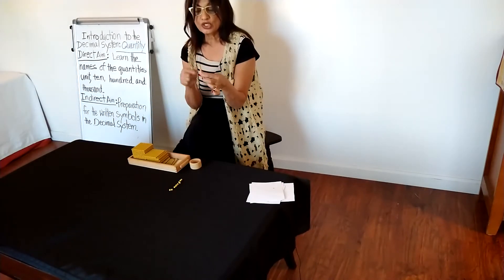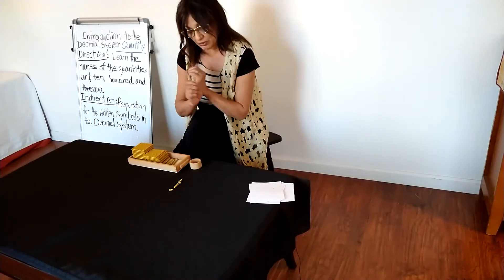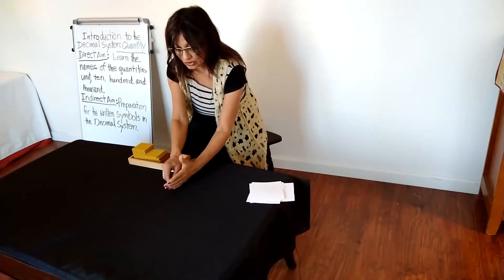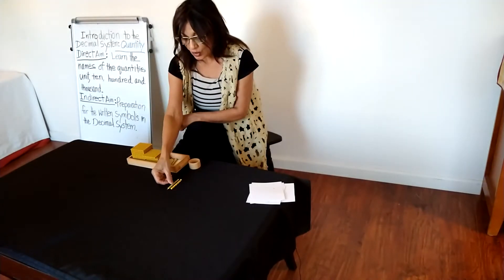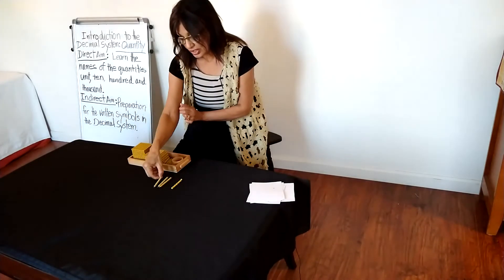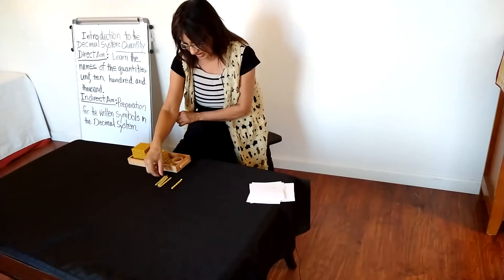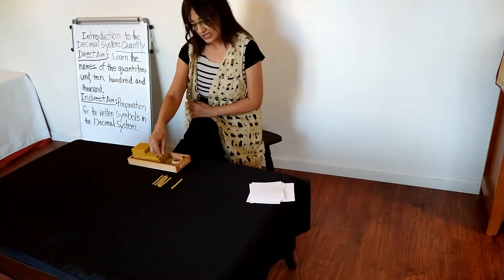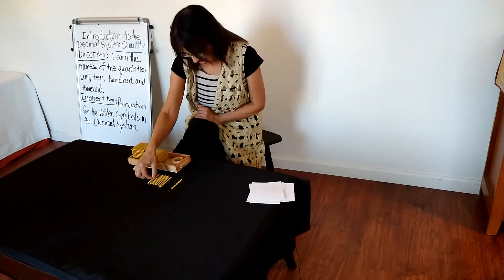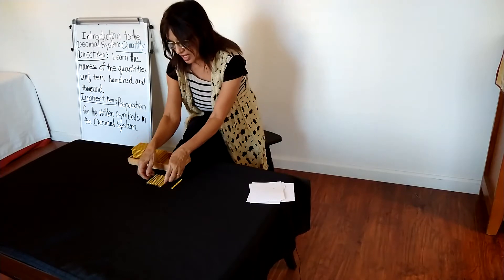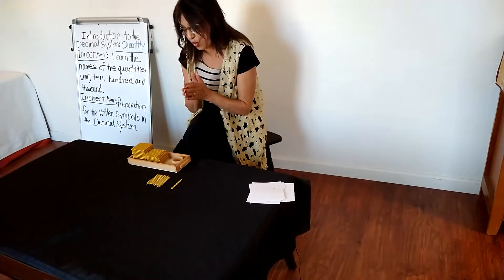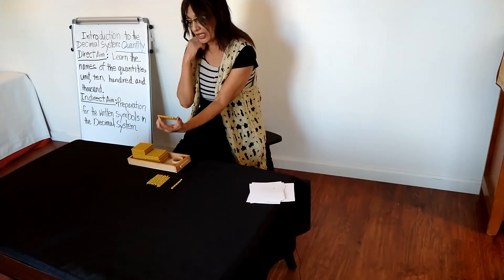It has 10 units in it. Let me show you the relationship between the ten-bar and 10 units. So counting by tens: 10, 20, 30, 40, 50, 60, 70, 80, 90, and 100. When we put 10 tens together, we get 100. So we have the 100 square here.